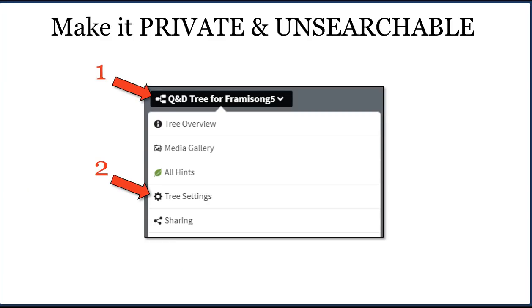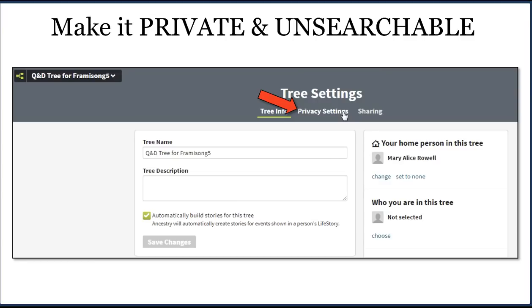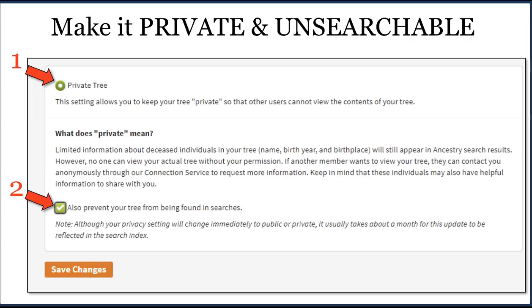I'll make the tree private and unsearchable, meaning other individuals at Ancestry cannot find this tree even if they search for it. I hit the black bar for the tree, select tree settings from the dropdown, then hit privacy settings, and click 'private tree' and make it unsearchable. This means I don't spread the misinformation that is almost guaranteed to exist in my quick and dirty tree — it's contained. It also means my match will not inadvertently find it, which I don't want to be the initial contact between us.